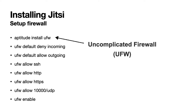This opens the SSH port and the HTTPS and HTTP ports. Furthermore, it will open port 10,000 UDP — not TCP — for Jitsi. In some older tutorials you will see that the whole range from port 10,000 to 20,000 was opened, which is not necessary anymore.